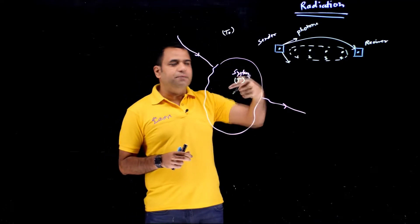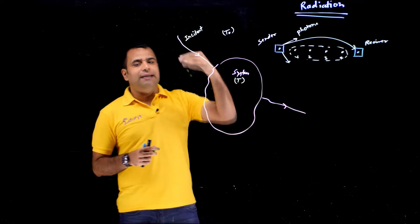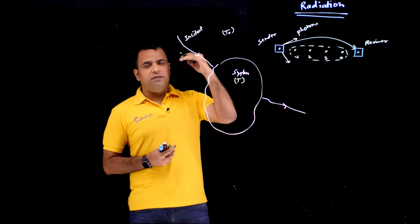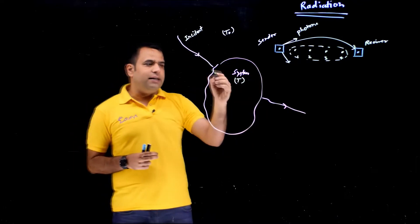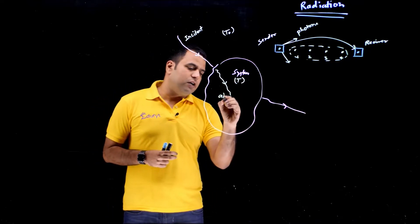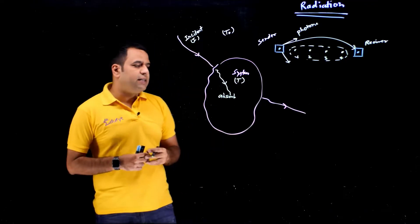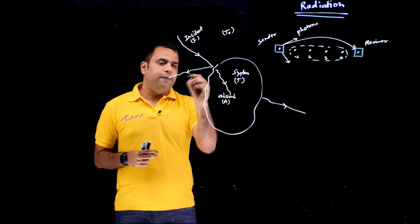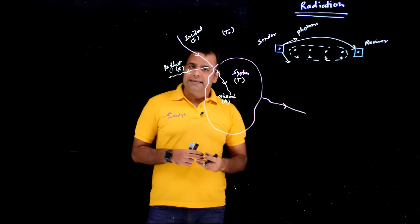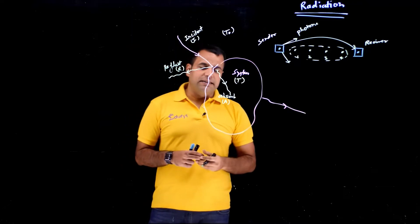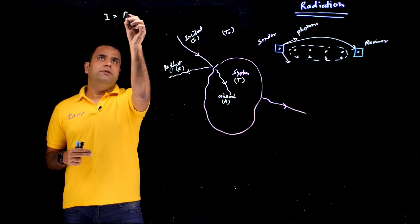Some portion of the emission done by the surrounding will be received by the system as incident energy. Part of this incident energy — call it I — the system will absorb, and the remaining portion it will reflect, calling it R. So we can write the formula: I equals R plus A, where A is the absorbed portion.